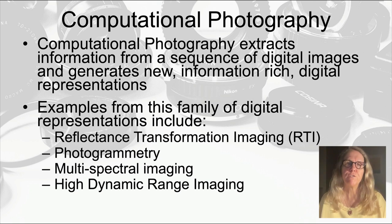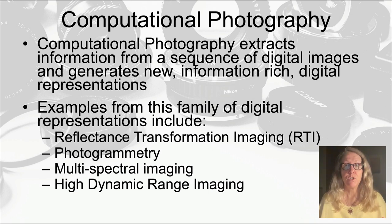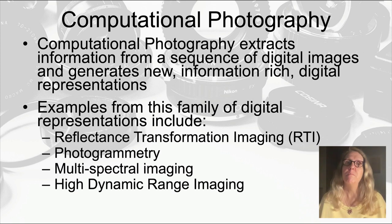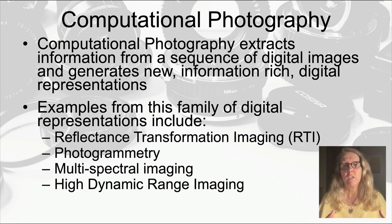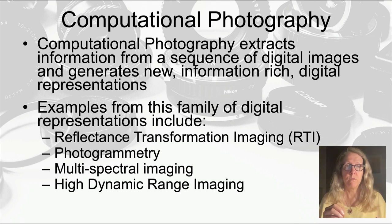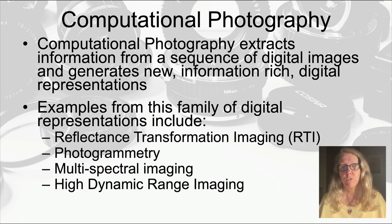At Cultural Heritage Imaging we work in the field of computational photography, meaning we take sequences of images that allow computer algorithms to extract information across that sequence and produce a digital representation that's not possible from a single image. The two technologies we primarily work in are reflectance transformation imaging or RTI, which captures fine surface details from a single camera point of view, and photogrammetry, where we take images all the way around a subject to produce a high resolution, high precision 3D model.